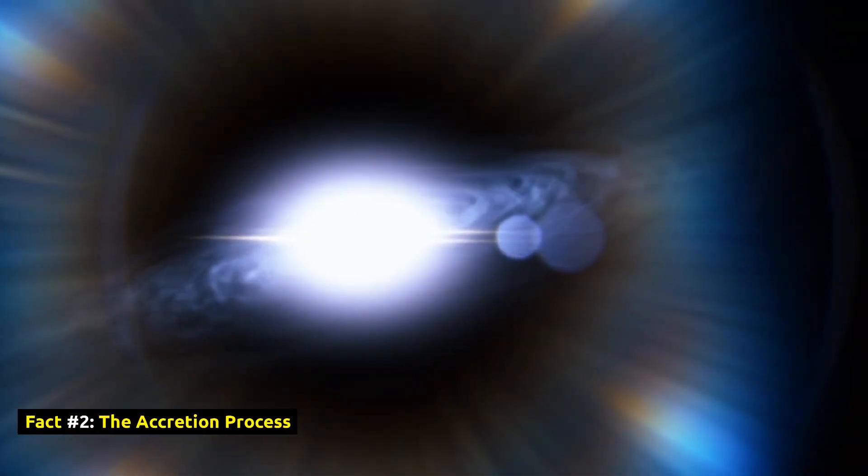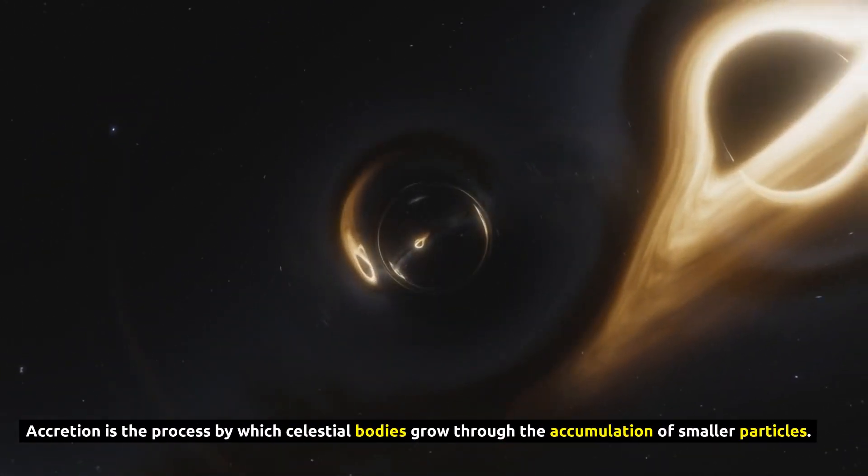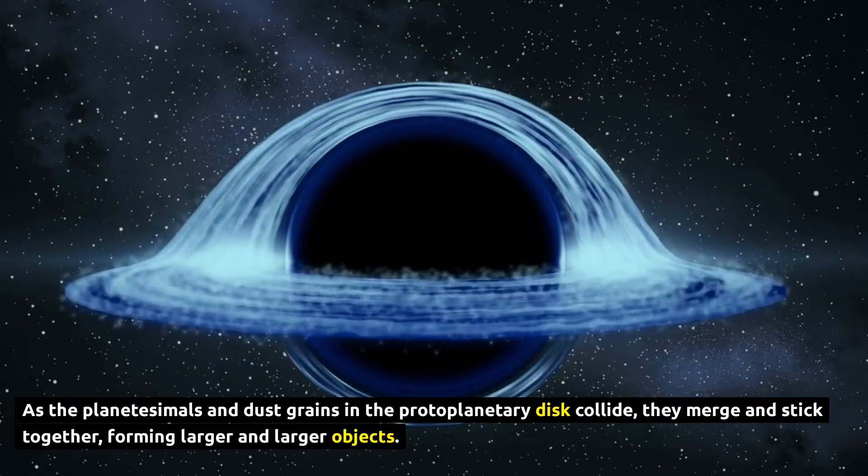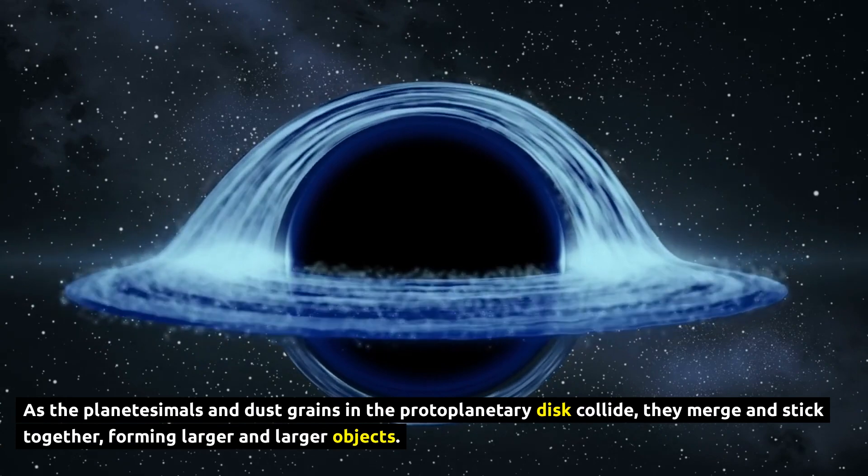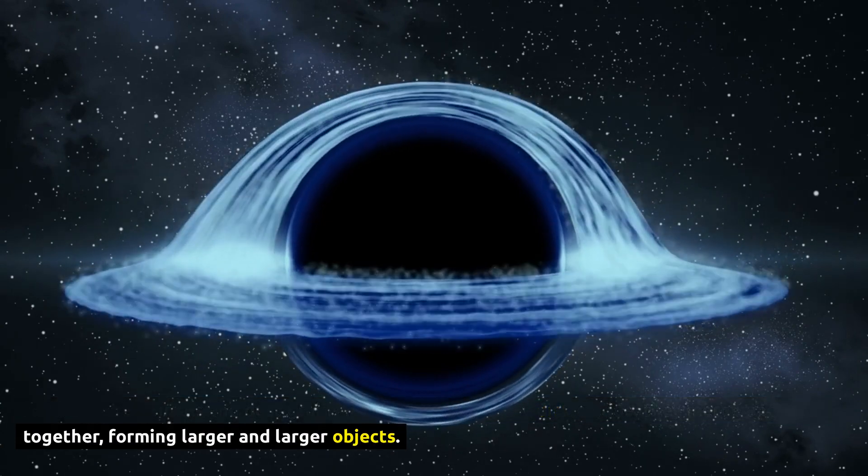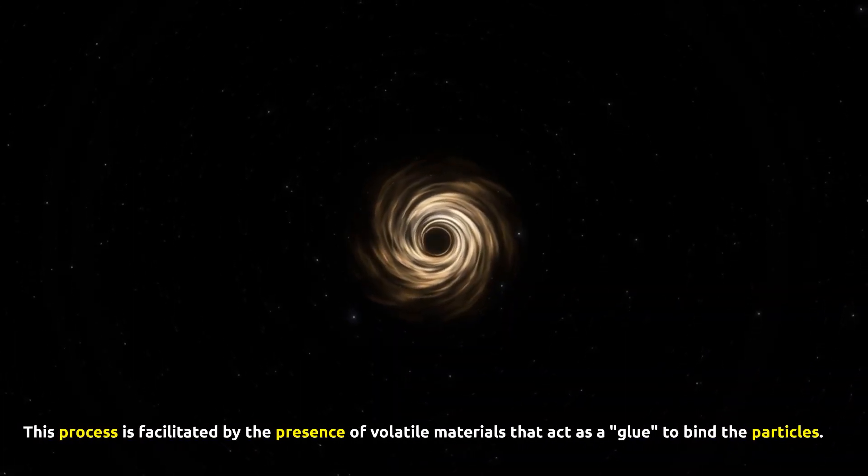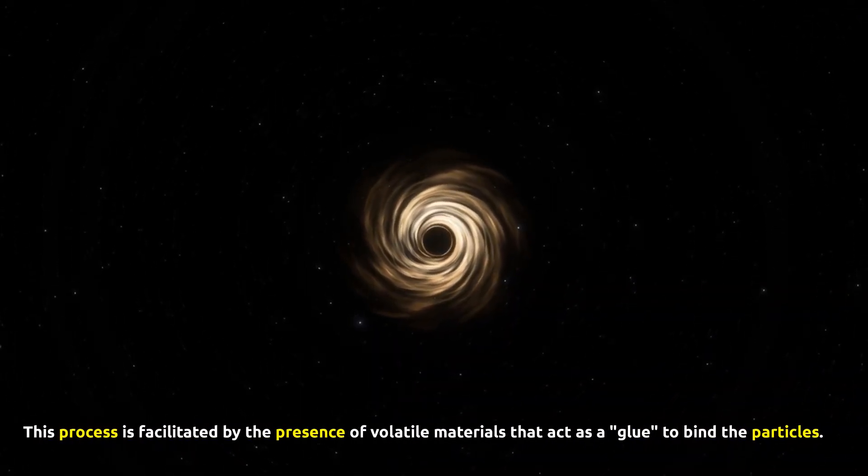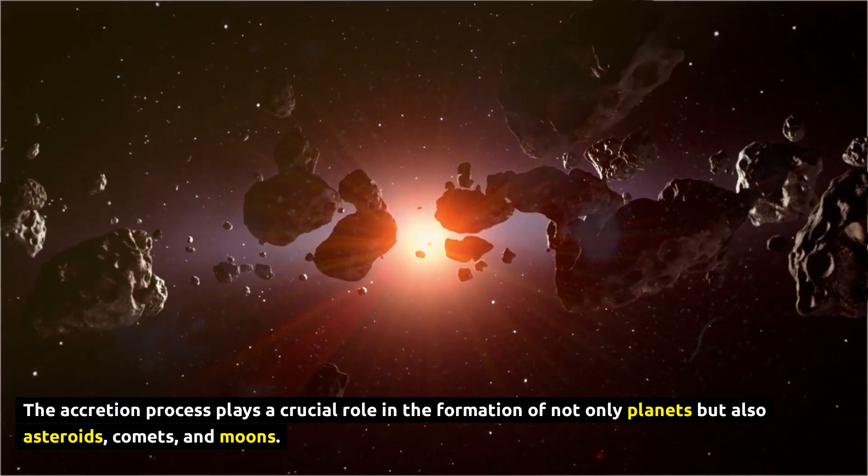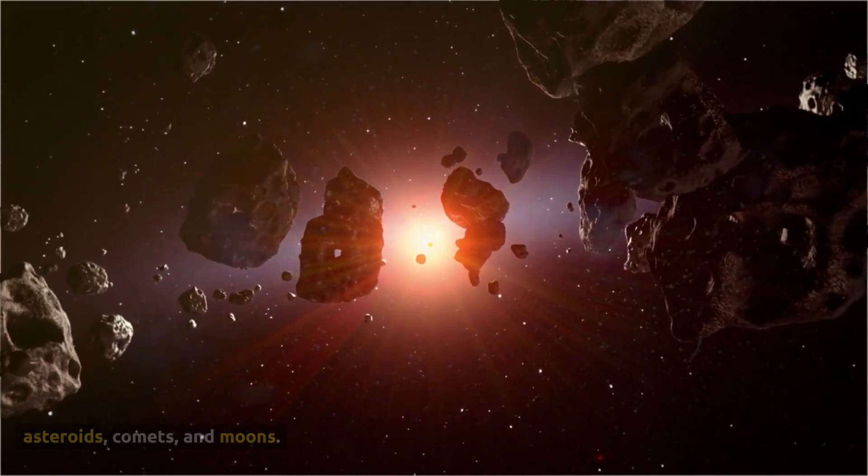Fact Number 2, The Accretion Process. Accretion is the process by which celestial bodies grow through the accumulation of smaller particles. As the planetesimals and dust grains in the protoplanetary disk collide, they merge and stick together, forming larger and larger objects. This process is facilitated by the presence of volatile materials that act as a glue to bind the particles. The accretion process plays a crucial role in the formation of not only planets but also asteroids, comets, and moons.